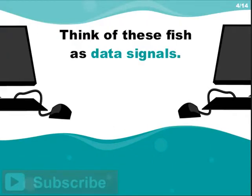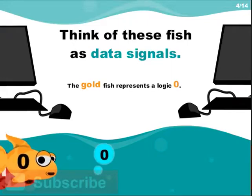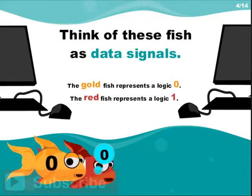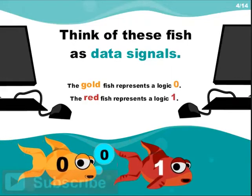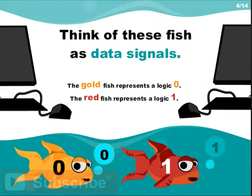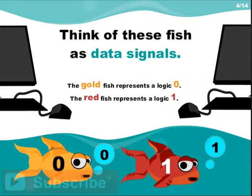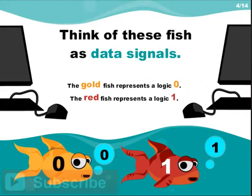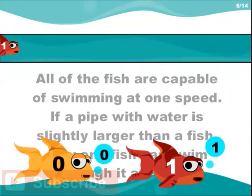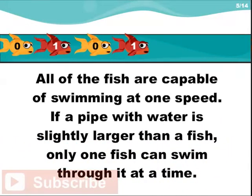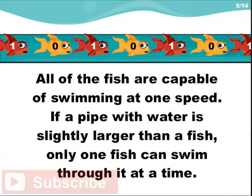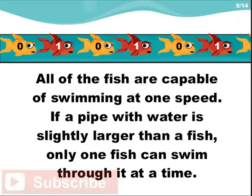Think of these fish as data signals. The goldfish represents a logic 0, and the redfish represents a logic 1. All of the fish are capable of swimming at one speed.